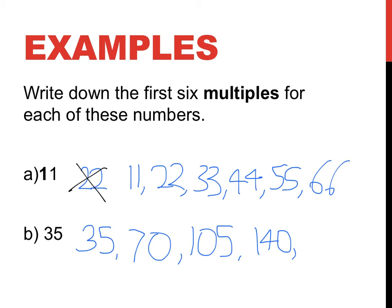140 plus 35. Well, that's 175. Because I just go 30 and 40 is 70. And then 175 plus 35. Well, 170 plus 30 is 200. 5 plus 5 is 10. So 210.